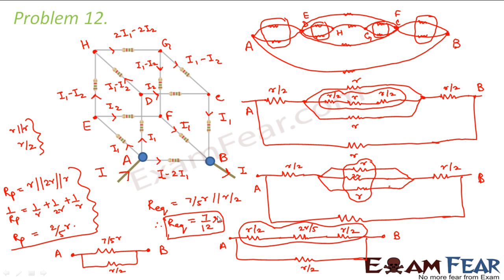I tried to solve as many problems as I could to show how we use different methods to calculate the equivalent resistance of complicated circuits. This entire lesson was dedicated to Ohm's law, the basics of current electricity, and all about resistors and their combinations. In the next lesson we will discuss how to analyze different electrical circuits, including complicated circuits with batteries, resistors, and capacitors together.